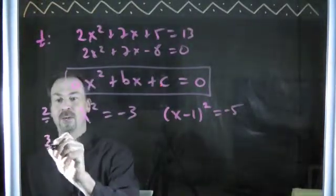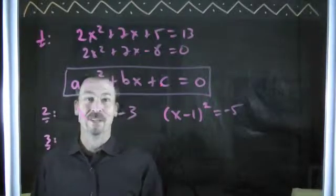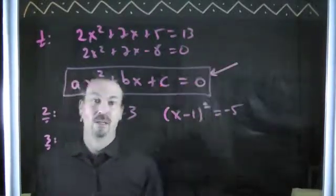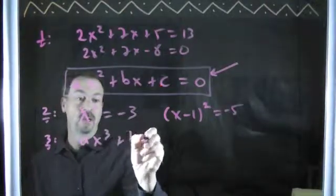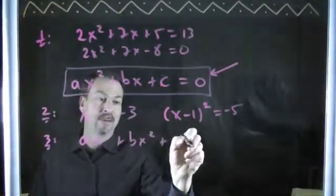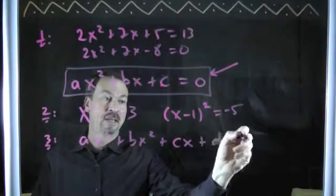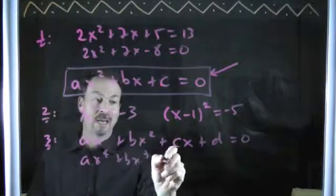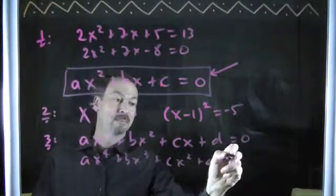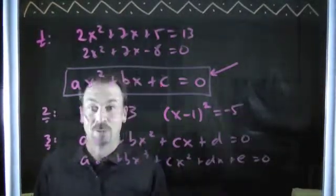And the third part is, well, it's a natural question. If there's a general formula for solving quadratic equations, is there a general formula for solving cubic equations? ax cubed plus bx squared plus cx plus d equals 0? Or quartic equations, ax to the fourth plus bx cubed plus cx squared plus dx plus e equals 0? And so on.